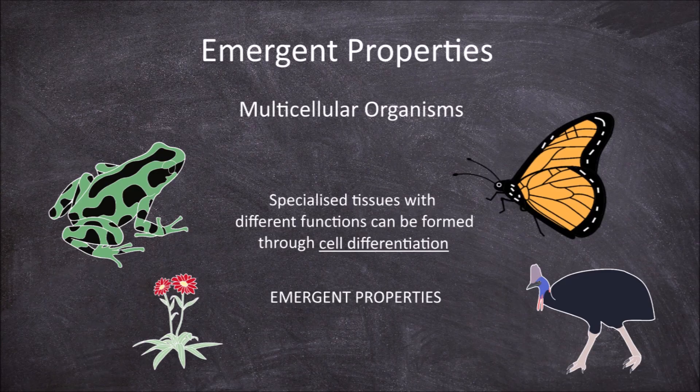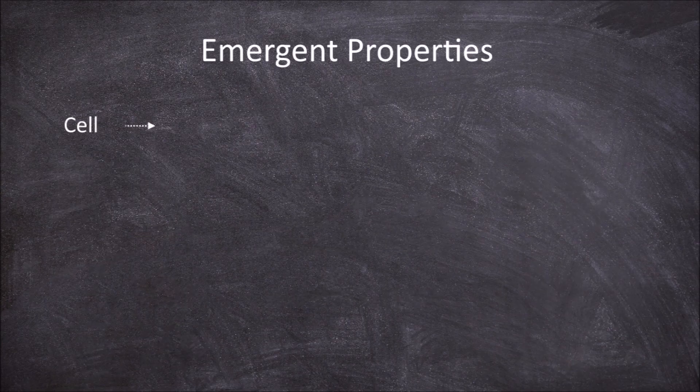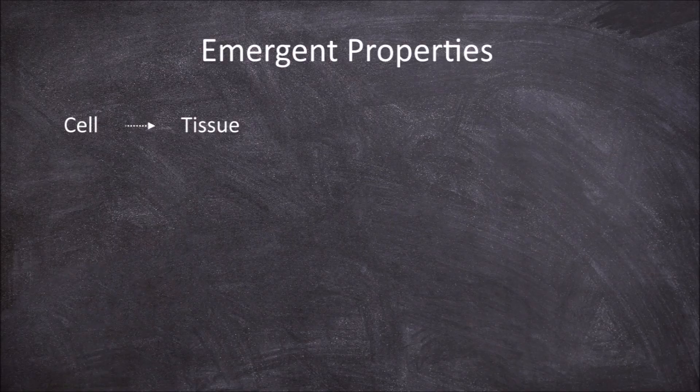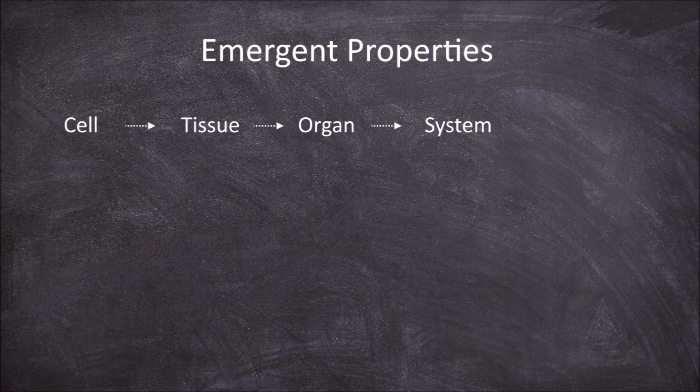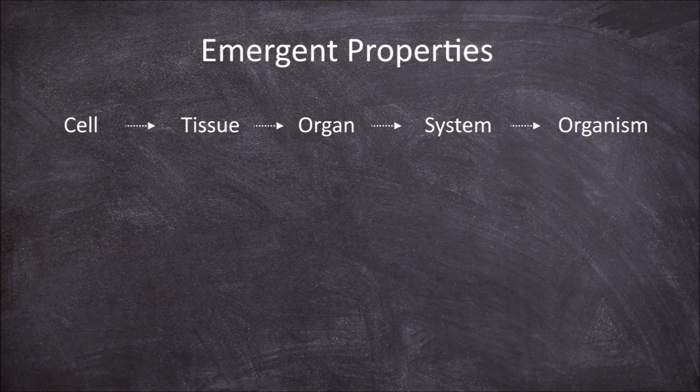In multicellular organisms, cells can be grouped together to form tissues. Multiple tissues can group to form organs. Organs can interact to form an organ system. These organ systems work together to carry out the functions of life for the multicellular organism.